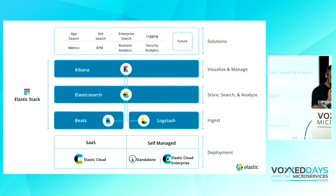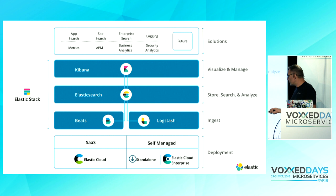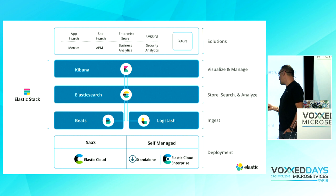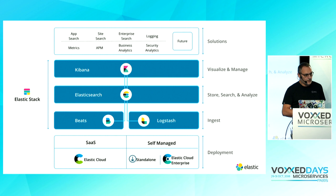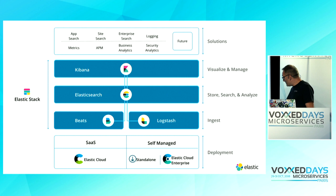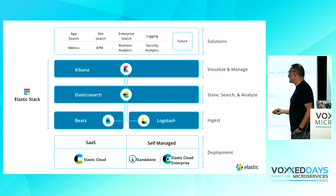You can manage the deployment of those components yourself — download everything from the website and deploy it yourself. Or you can use Elastic Cloud Enterprise, a commercial product where you can easily deploy your Elasticsearch cluster and Kibana with all security included. We also run the same product ourselves on Google Cloud Platform and AWS — that's our Elasticsearch as a Service offering called Elastic Cloud.